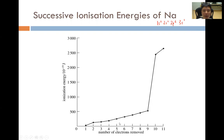Let us learn how to read this graph. This is the energy of the first ionization energy — it is very close to zero but it is not zero. This is the value of the first ionization energy of sodium, while this is the second, this is the third ionization energy of sodium, and so on. One thing we can observe is that the second IE is higher than the first IE, while the third IE is higher than the second IE — successive ionization energies always increase.